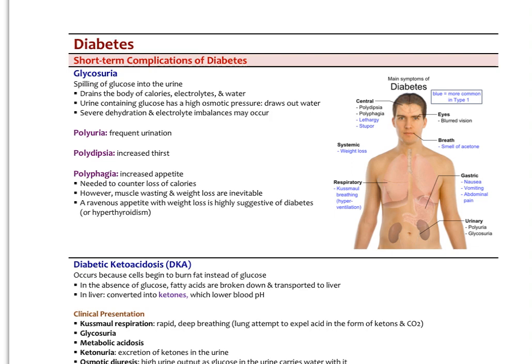The glucose draining into the urine has an osmotic effect — it drains the body of electrolytes, pulls out water, and drains you of calories. This osmotic pressure causes rapid dehydration, so severe dehydration and electrolyte imbalances can occur from glycosuria. That's where we typically see increased urination, increased thirst (polydipsia), and increased appetite (polyphagia) needed to counter caloric loss. Even with eating a lot, muscle loss and wasting will be inevitable. Patients often have a ravenous appetite — think diabetes or potentially hyperthyroidism.